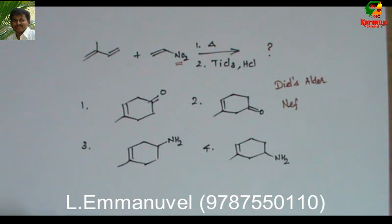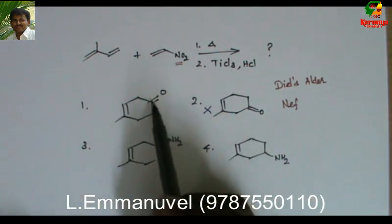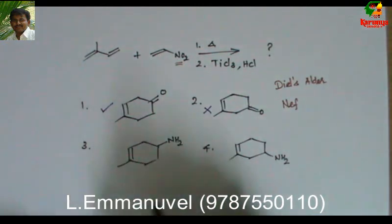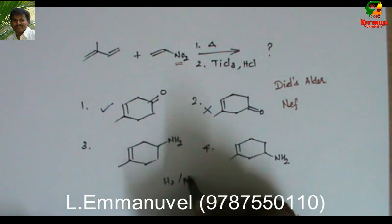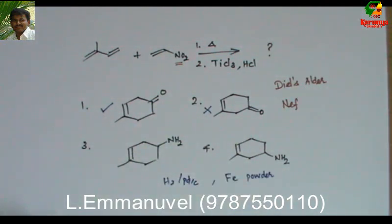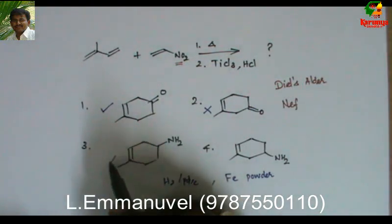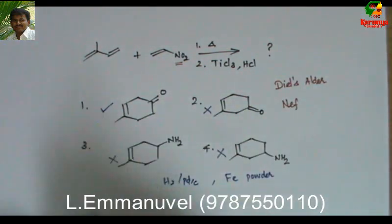We have already established the regioselectivity. In the Diels-Alder reaction, we get a product where the substituents are on 1,4 carbons. Under the second reaction condition — titanium trichloride and H+ — the NO2 is replaced with C=O, so that is the answer. NO2 cannot be reduced with titanium trichloride; for reduction you need H2/Pd-C or iron powder. Under this reaction condition, NO2 cannot be reduced, so those options are wrong. The answer is option 1.